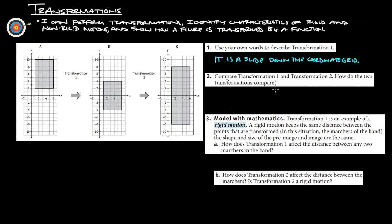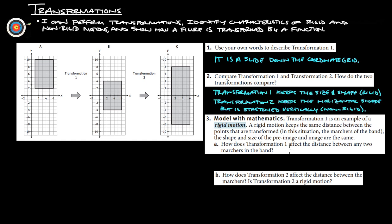Number two, compare transformation one and transformation two. How do the two transformations compare? So we can see in transformation one, the size and shape is kept the same. So that's going to make it a rigid transformation. And then from transformation two, so from the pre-image here to the image, it's actually the horizontal shape is kept, but then it's stretched vertically because now it's twice as big.